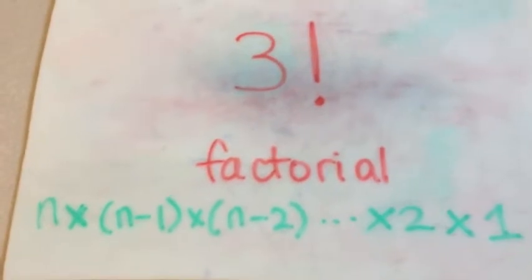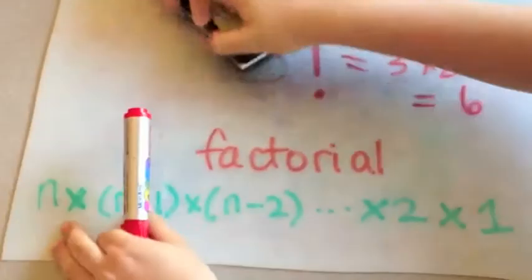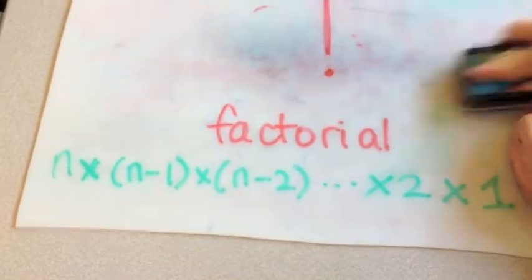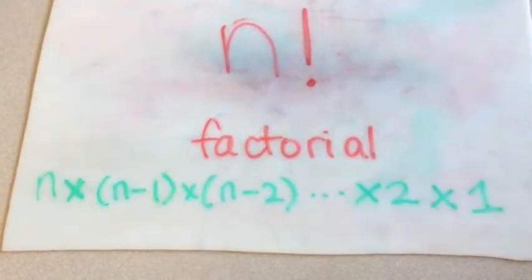For example, 3 factorial is 3 times 2 times 1, or 6. So the number of permutations or orders of N distinct objects is N factorial.